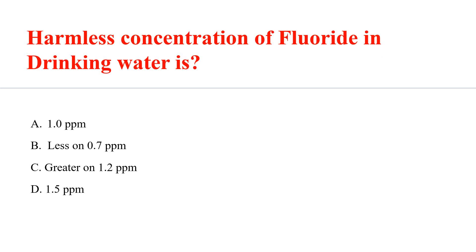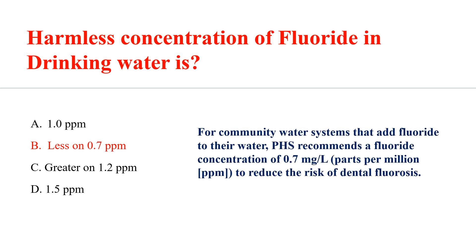Harmless concentration of fluoride in drinking water is 0.7 ppm. For community water systems that add fluoride, the PHS recommends a fluoride concentration of 0.7 mg/L (parts per million) to reduce the risk of dental fluorosis.